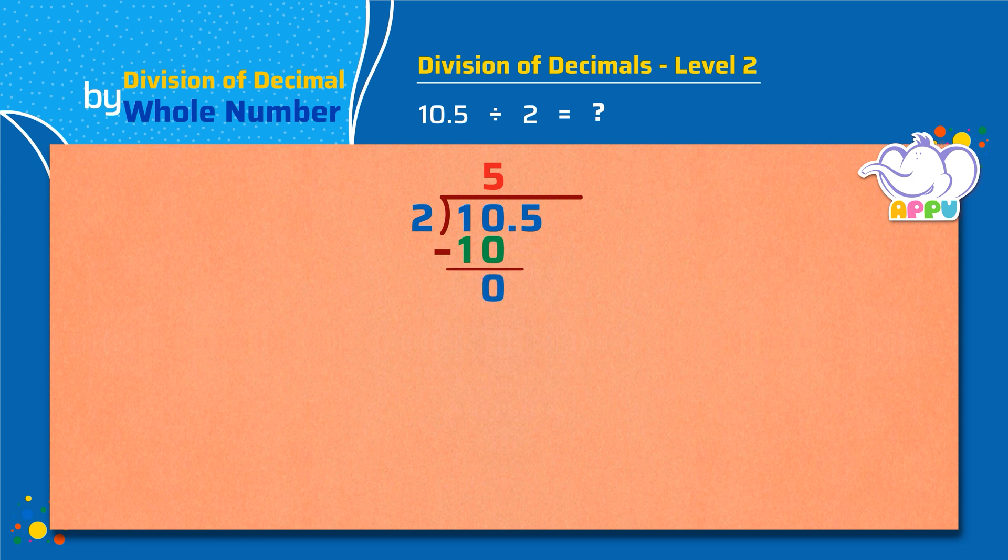We have a decimal point, so we place a decimal point and bring down the next digit. That is 5. Now we get 5.